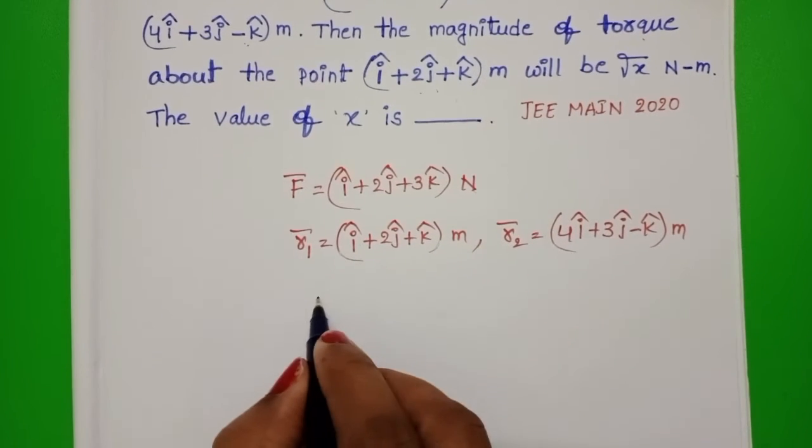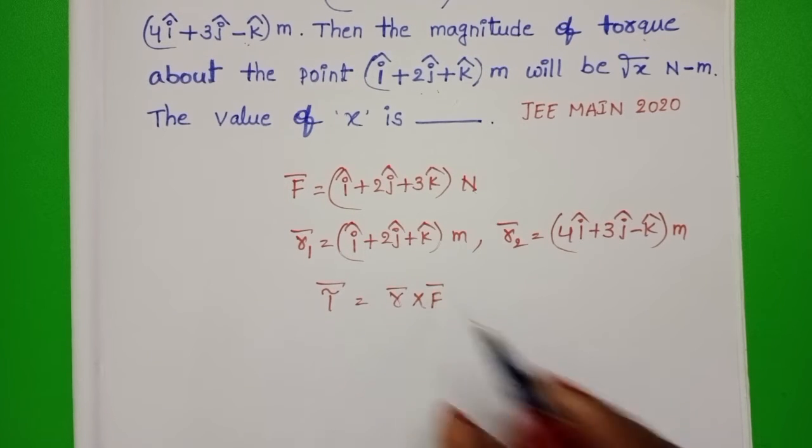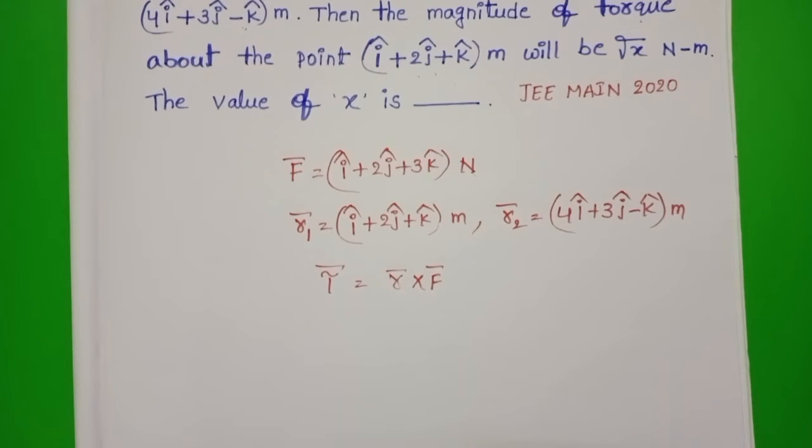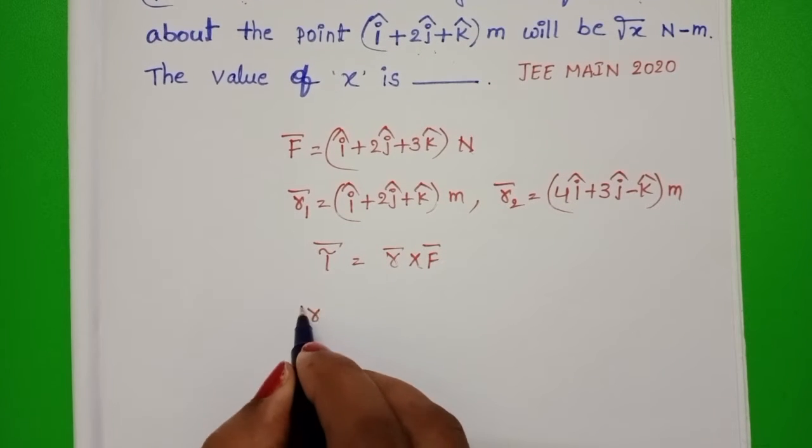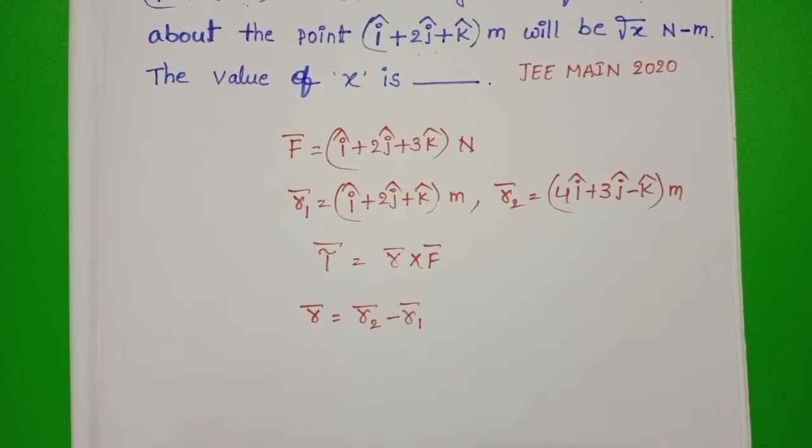Torque equals R bar cross F-bar. First to find out the position vector, R bar equals R2 bar minus R1 bar.